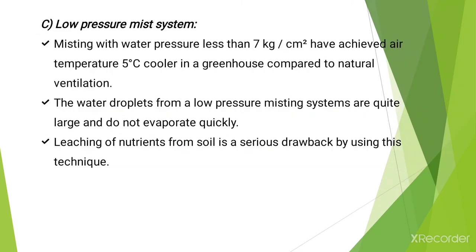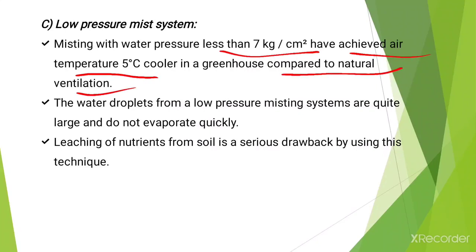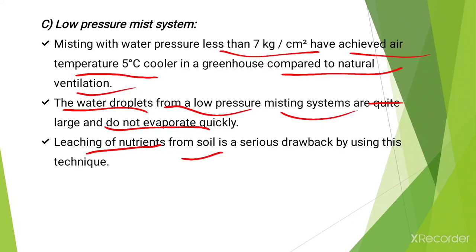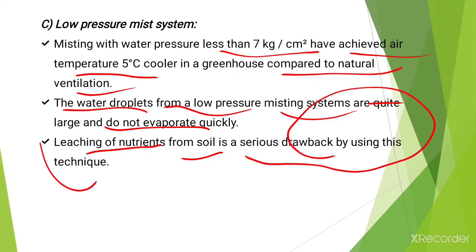The last cooling system is the low pressure misting system. Misting with water pressure less than 7 kg per centimeter square achieves air temperature about 5 degrees Celsius cooler in a greenhouse compared to natural ventilation. However, the water droplets from a low pressure misting system are quite large, so they do not evaporate quickly, and leaching of nutrients from the soil is a serious drawback of this technique. This concludes all the cooling systems covered in this lecture. Thank you for listening.